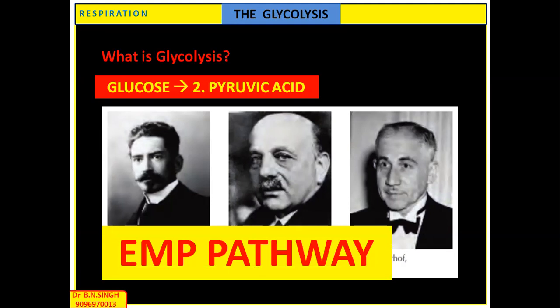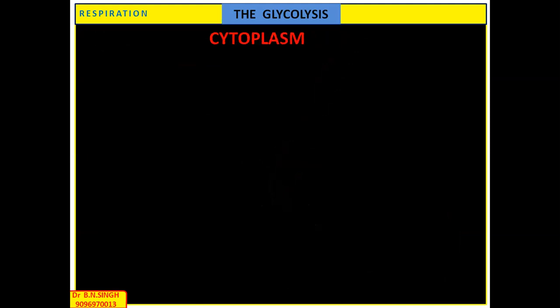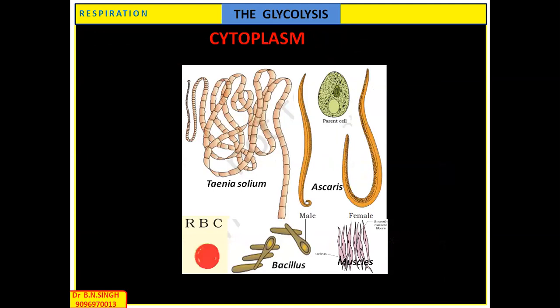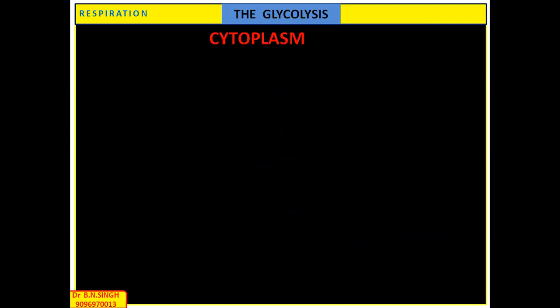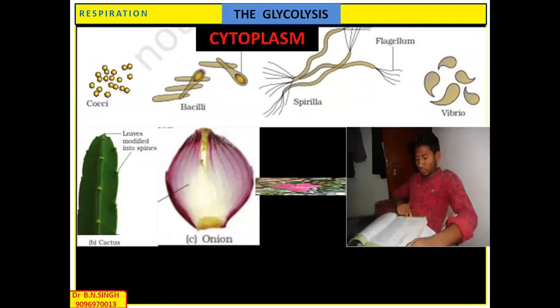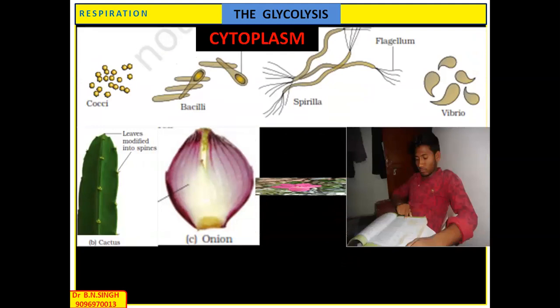Where does glycolysis occur? Glycolysis takes place in the cytoplasm of the cell. In different groups of organisms — whether parasites or other organisms — glycolysis is carried out in the cytoplasm. Human RBCs, Theileria, yeast cells, different bacteria, and muscle cells all show glycolysis. Plants as well as animals also perform glycolysis in their cytoplasm.